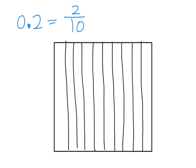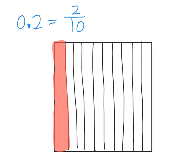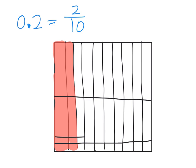Now that we have our ten strips, to model two tenths we're just going to take our coloring pen and shade in two of those strips — there's one strip and here's our second strip. I've just modeled two tenths. Now, what if I went the other direction and cut each tenth into tenths? I'm going to cut it in half and then cut one, two, three, four, five pieces.